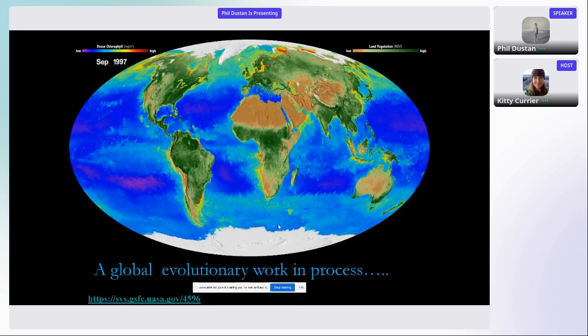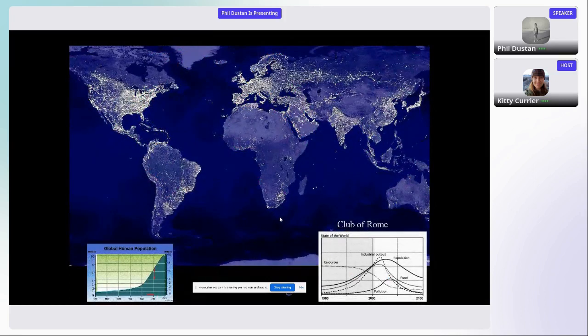And so you can think of the biosphere as a global evolutionary work in process. And then we have another evolutionary work in process, which is humans. And I refer you to the Club of Rome for more on that.